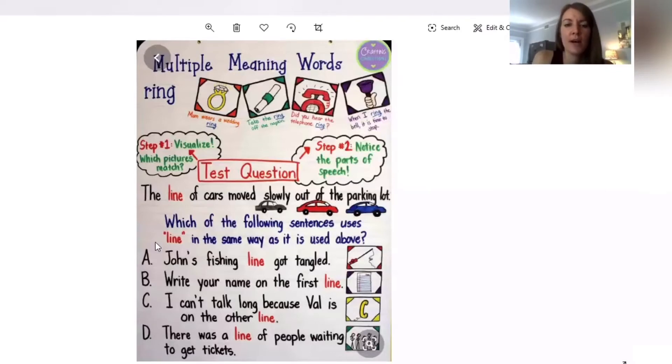So now we have to figure out which of the following sentences uses line in the same way as it's used above to mean in a row. A: John's fishing line got tangled. I'm going to visualize a fishing pole and at the end of the fishing pole is this extra line or string or material that's attached to the hook. Is that the same as in a row?